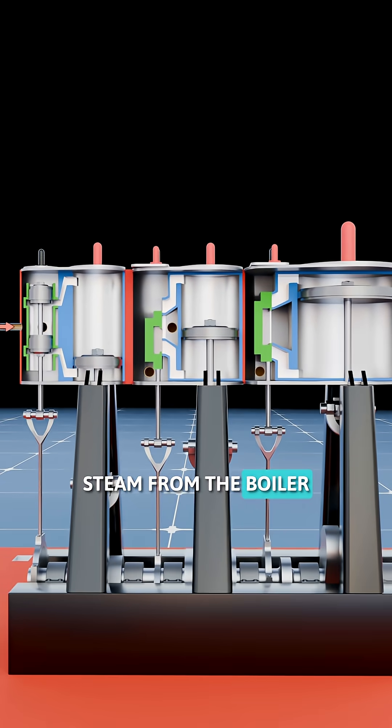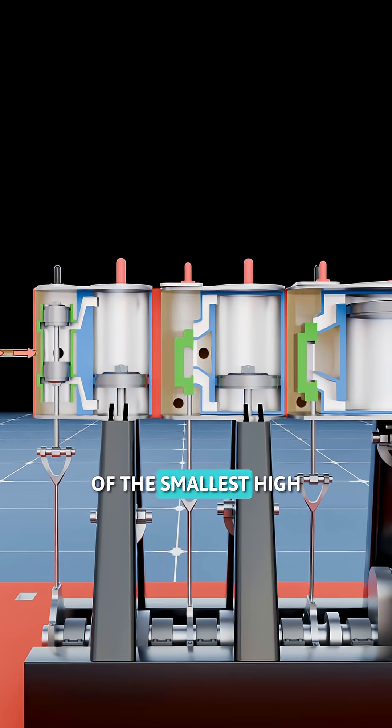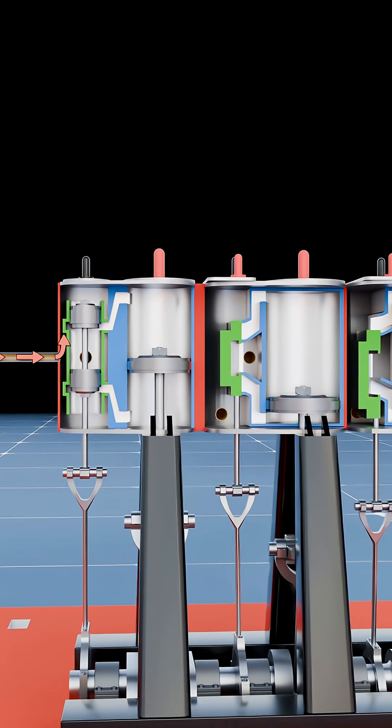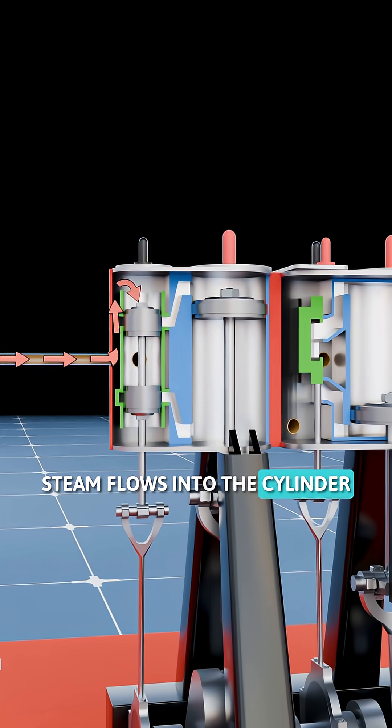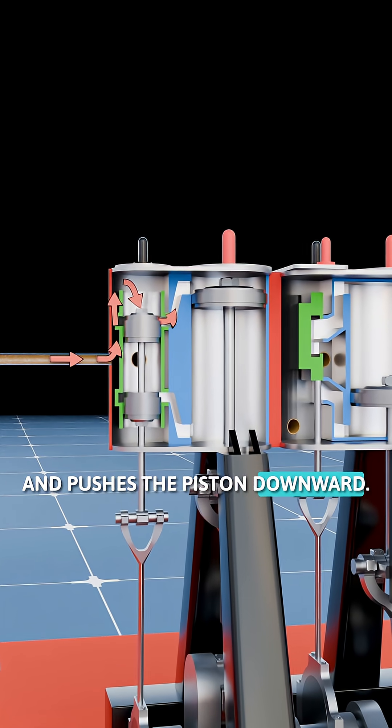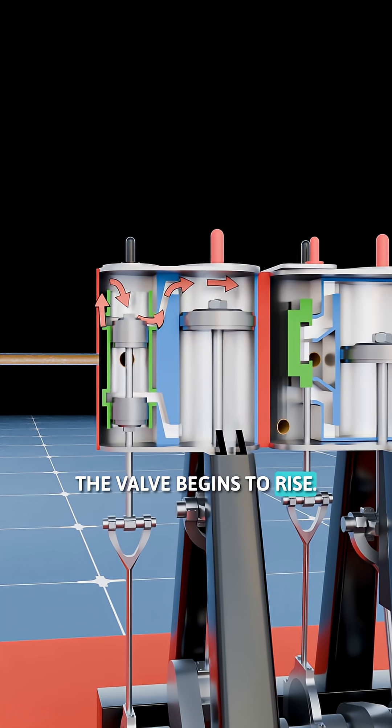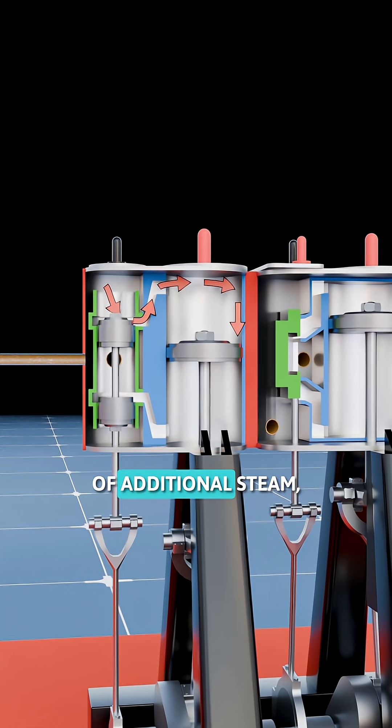High-pressure steam from the boiler first enters the steam chest of the smallest high-pressure cylinder. When the valve is in its lowest position, steam flows into the cylinder and pushes the piston downward. As the piston moves, the valve begins to rise, cutting off the flow of additional steam.